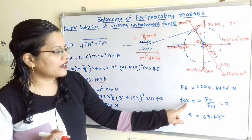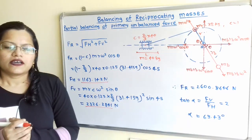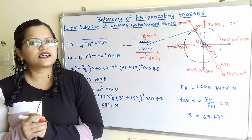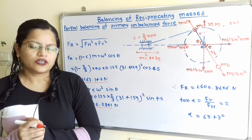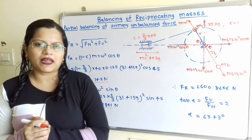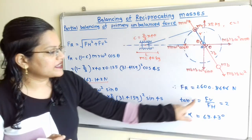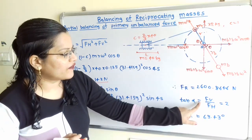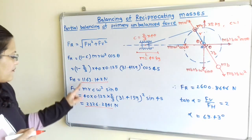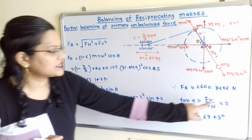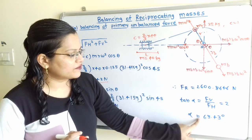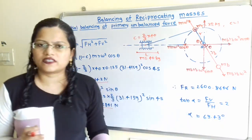To find the direction of the resultant unbalanced force: tan α = FV / FH = 2326.284 / 1163.142 = 2, therefore α = tan⁻¹(2) = 63.43°. This gives the direction of the resultant unbalanced force from the horizontal.